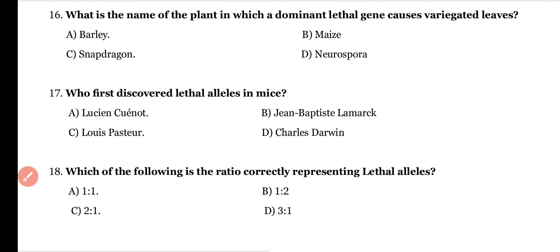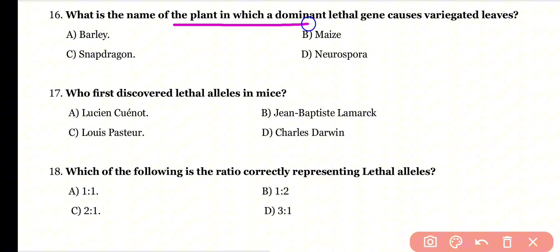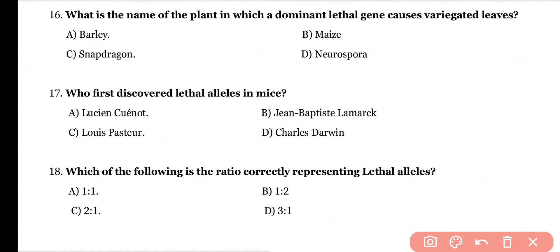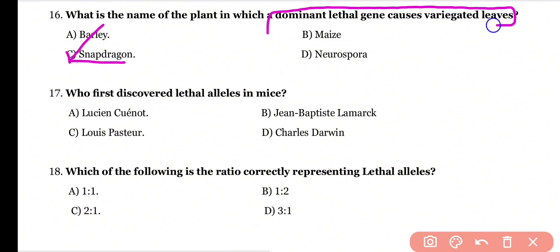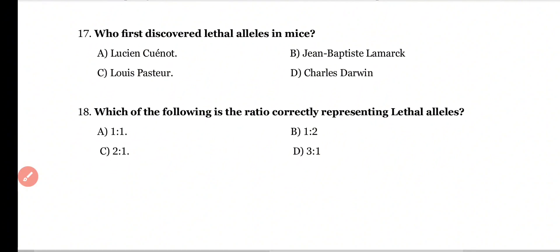Question 16: What is the name of the plant in which a dominant lethal gene causes variegated leaves? Options: barley, maize, snapdragon, or neurospora? Correct answer is option C. In Antirrhinum majus (snapdragon), the dominant lethal gene produces variegated leaves.